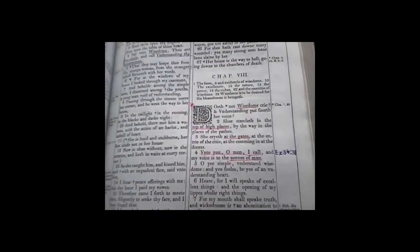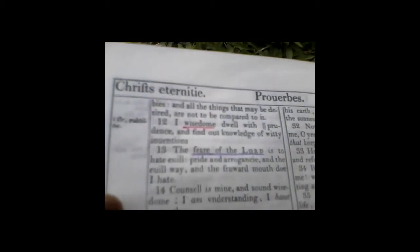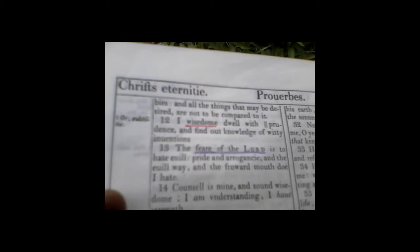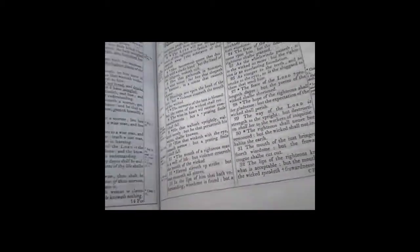This is Proverbs chapter 8 verse 11: For wisdom is better than rubies, and all things that may be desired are not compared to it. So Noah was willing to give up his reputation, his house, his food, whatever, for that hundred year period.